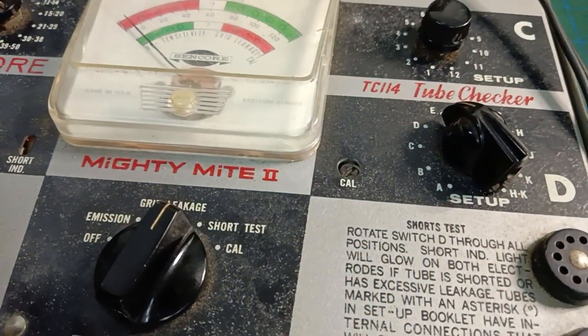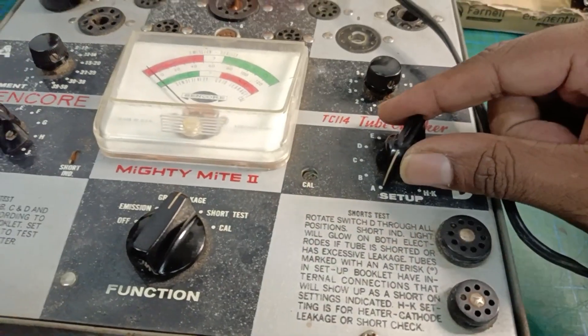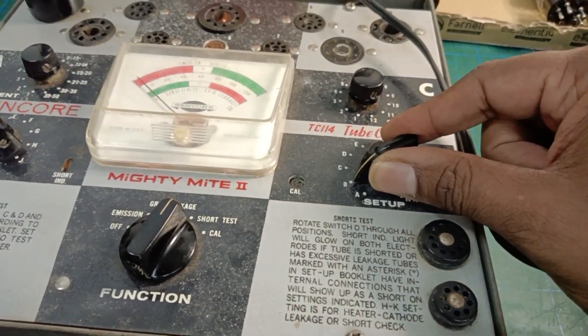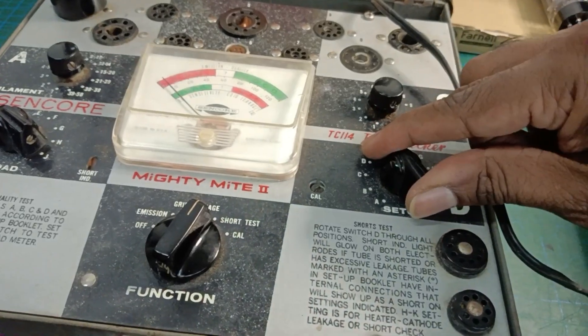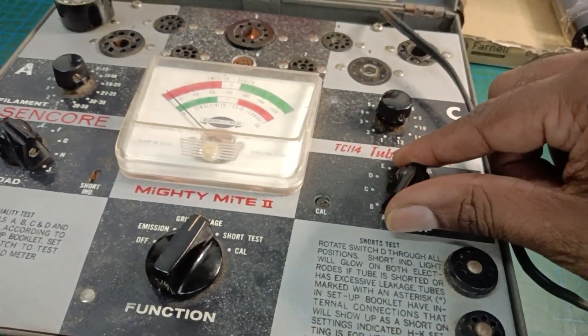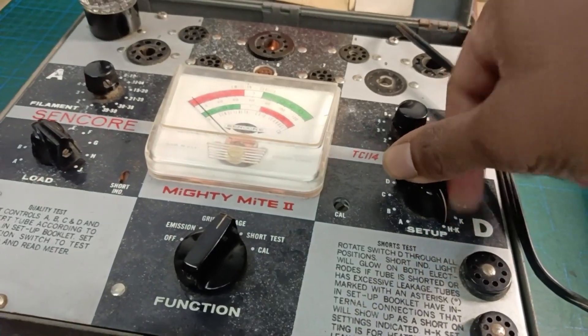Emissions, Grid Leakage, and Short Circuit. For Short Circuit, we select Short Test on the function knob, and then we rotate this knob through all the settings one at a time. If there is a short, the neon indicator will light up. For this tube, there is no short. The neon indicator did not light up on any of the settings.